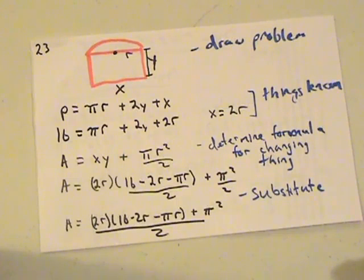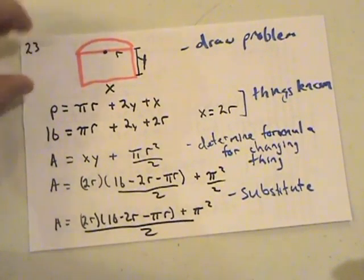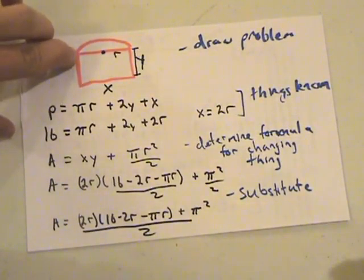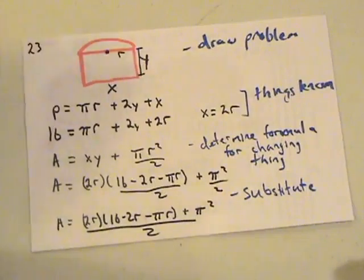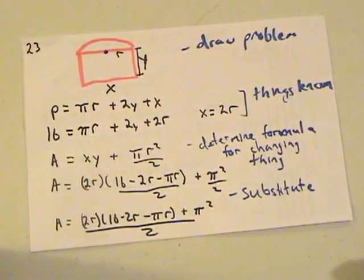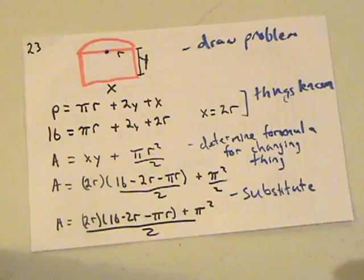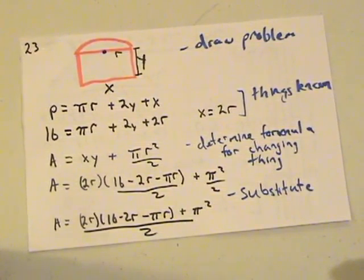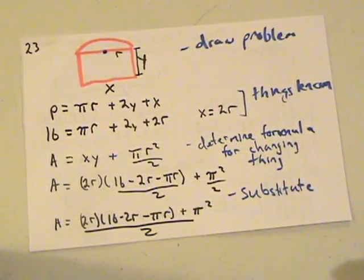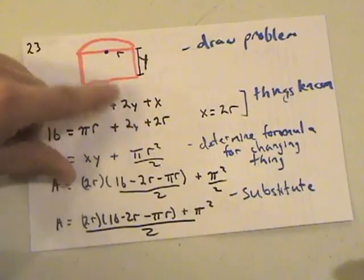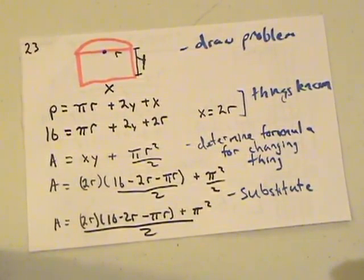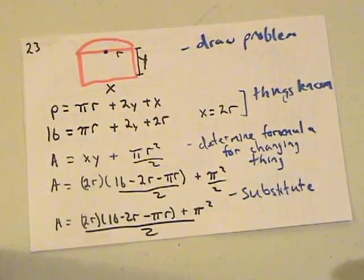So first we draw the problem. And then we figure out the perimeter. And since this is only a half circle, we only have to do pi r, not 2 pi r, since it's only a semi-circle. And then for the perimeter of the other part, we only have to do 2y plus x because we already have that side. So the perimeter equals pi r plus 2y plus x.